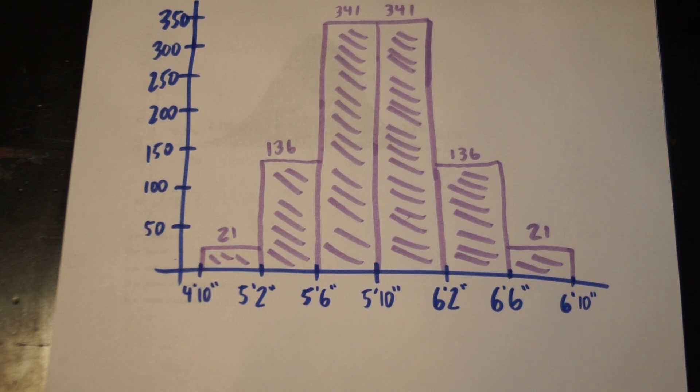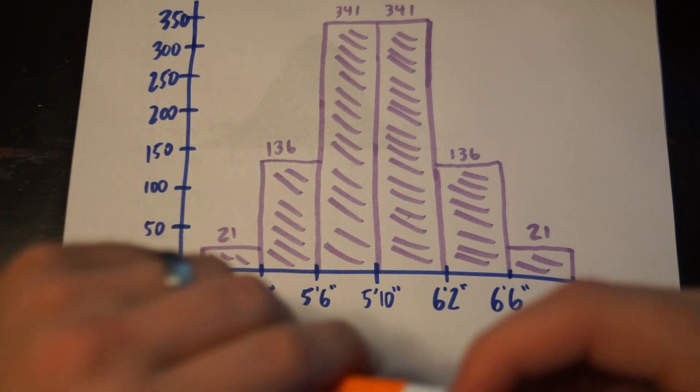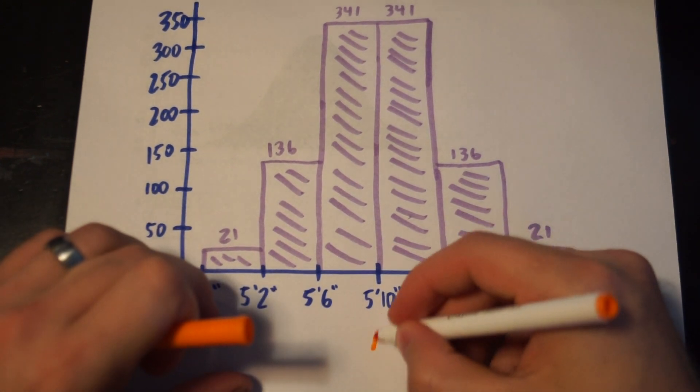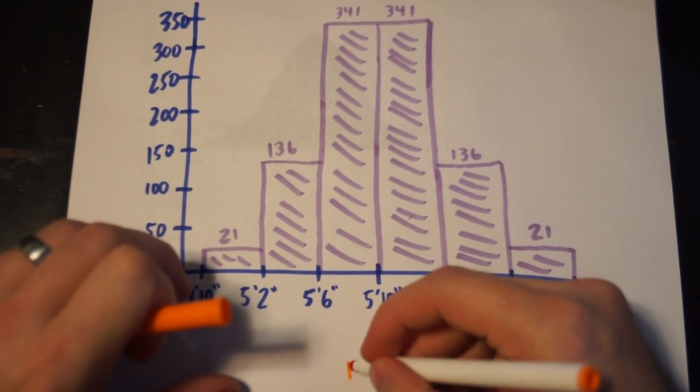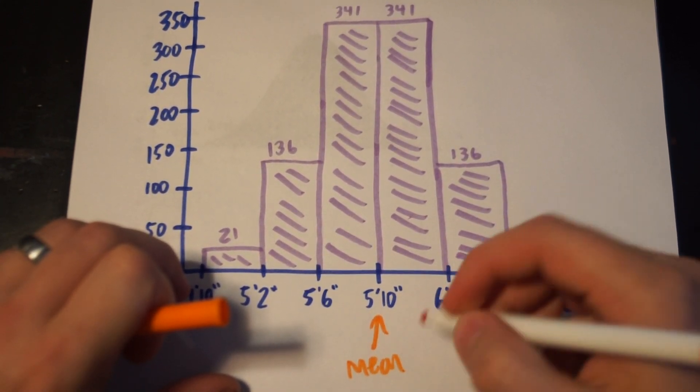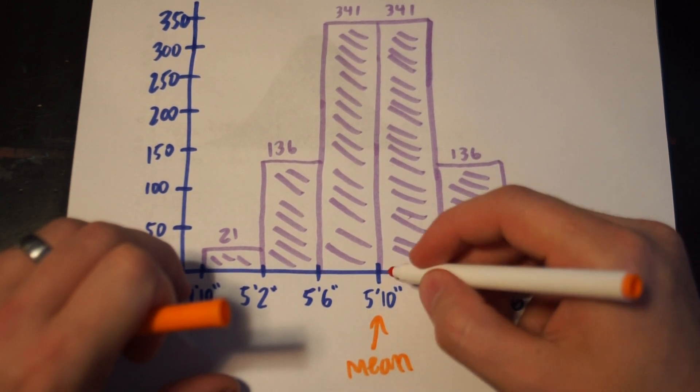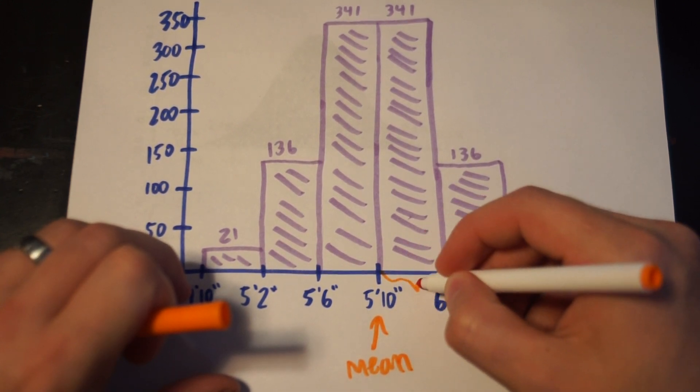If we have normal distribution, we get to use a lot of fun tools and statistics. Now this is a histogram that is approximately normal. We have an average right here in the middle, which also because it's symmetric, our median happens to be our mean. And then we have this distance apart. So these bin sizes...